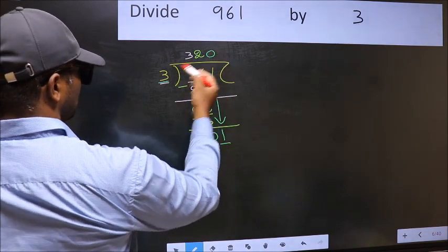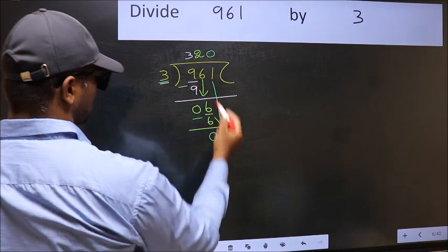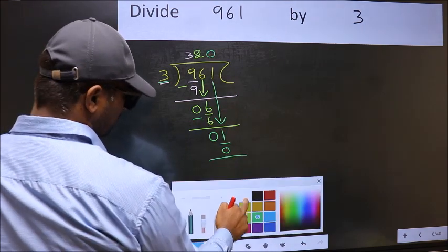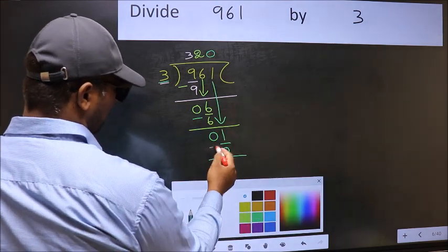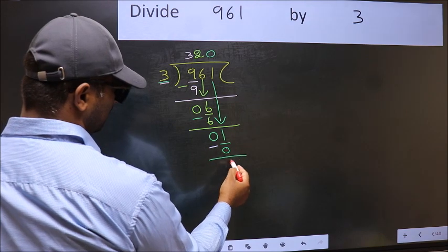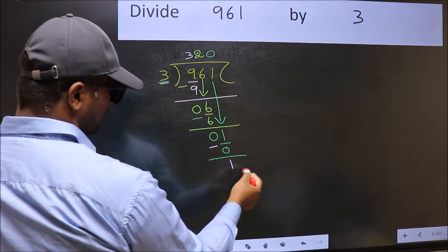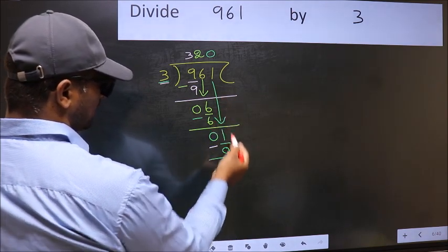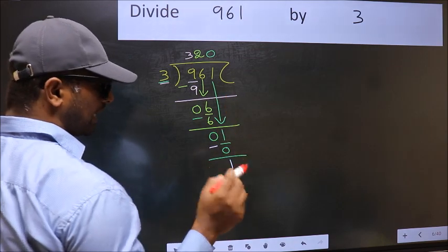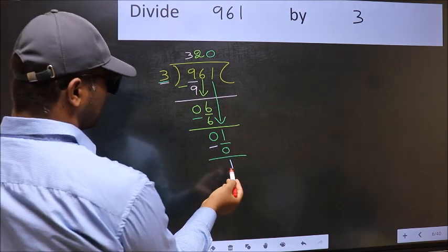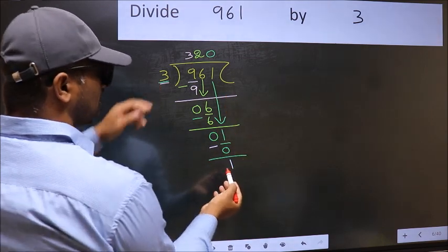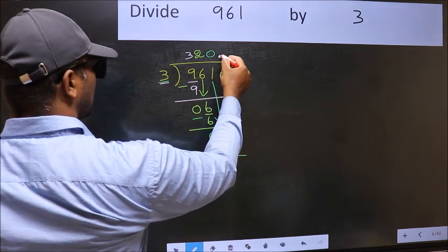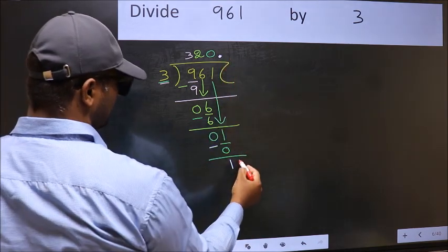So 3 into 0 is 0. Now you should subtract. 1 minus 0 is 1. Over here, we did not bring any number down. And 1 is smaller than 3.